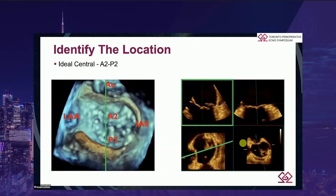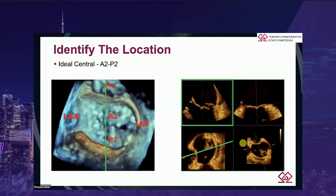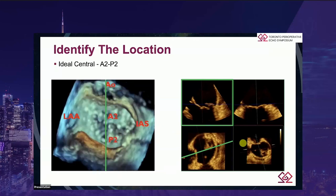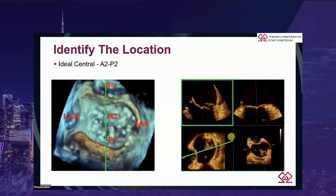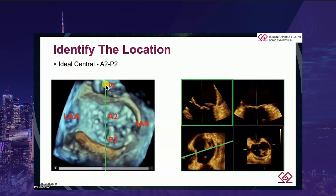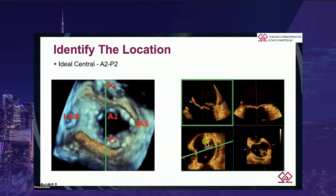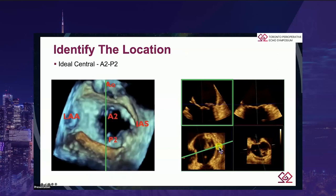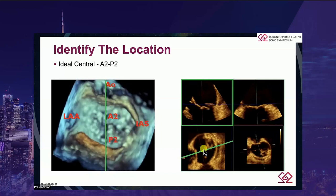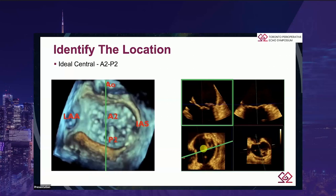Once you've identified the mechanism and quantified the severity, the next step is to identify the location. Using MPRs, we create our green plane straight down the middle of the valve. You can see that, yes, it is a P2 flail, but it's actually a P2 medial. Using MPRs, you can increase your accuracy and focus your target location in the precisely desired location for optimal results.